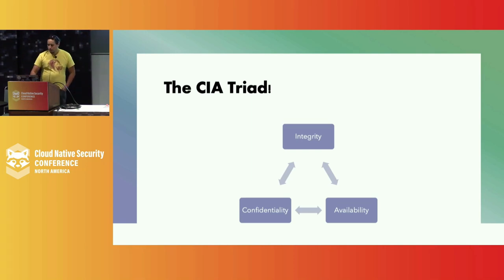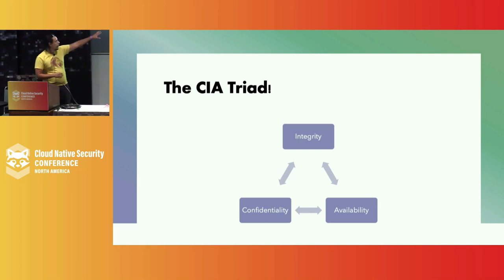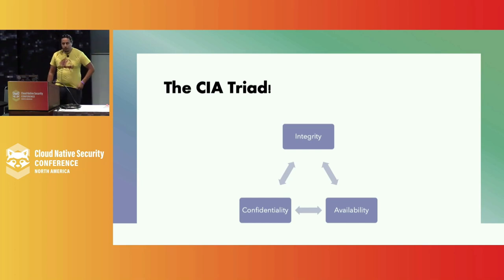You can take pretty much any security control and try to map it to one or more of these. Interestingly, availability is often ignored — people often focus on confidentiality and integrity. But the fact that your system has to stay online, that it has to meet its SLAs, is a critical component of availability as well.